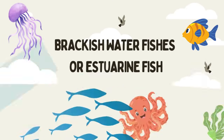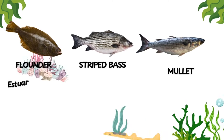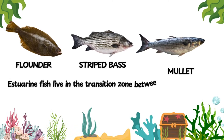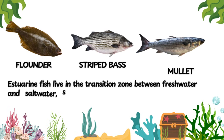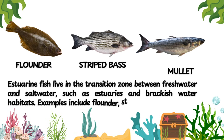Brackish water fishes or estuarine fish. Estuarine fish live in the transition zone between freshwater and saltwater, such as estuaries and brackish water habitats. Examples include flounder, striped bass, and mullet.